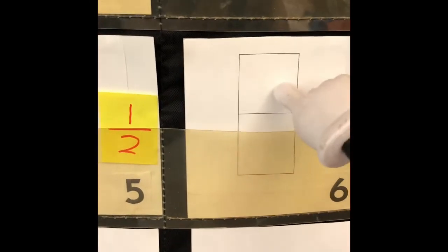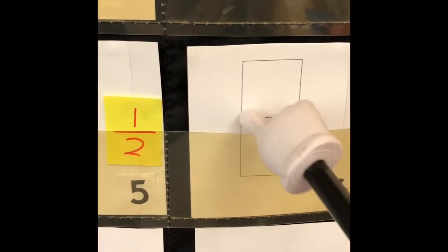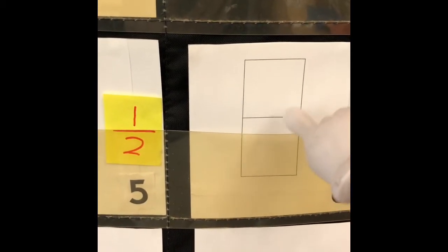I notice that the rectangle where the graham cracker was is split into two equal parts and none of the parts are left.